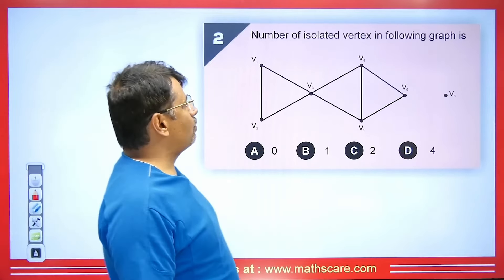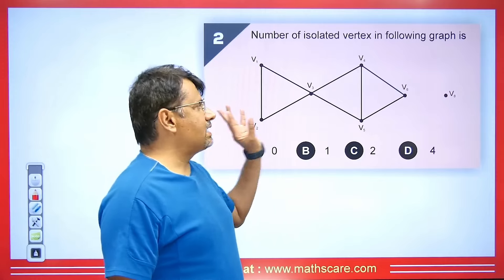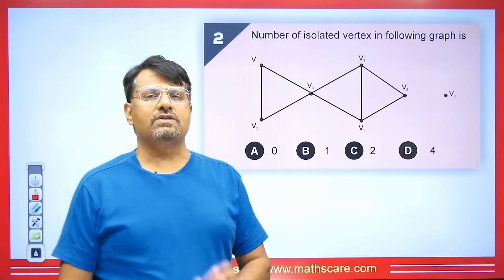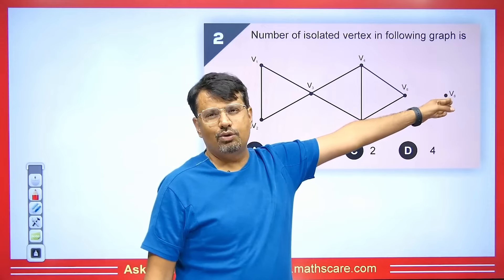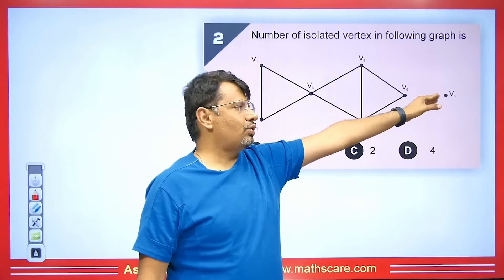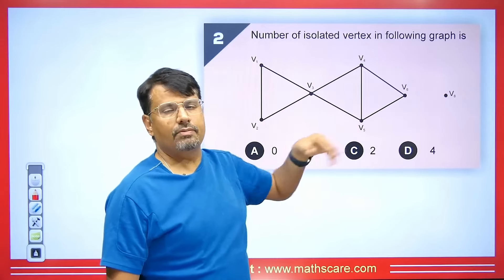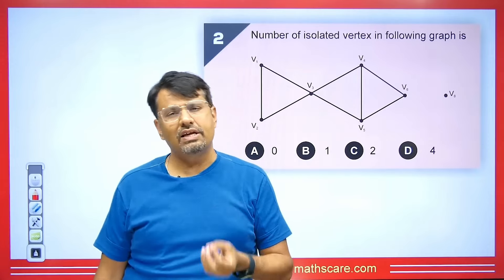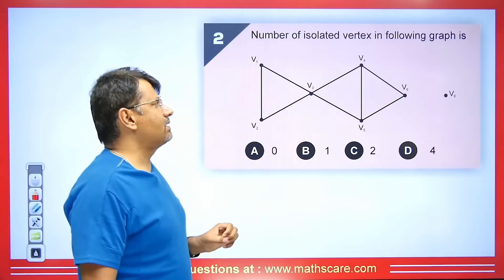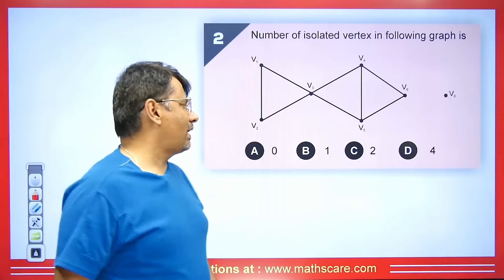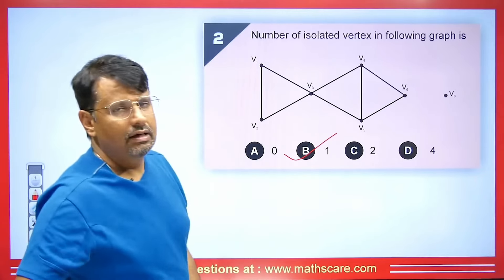The next question asks for the number of isolated vertices in the given graph. There is only one isolated vertex — the one whose degree is 0. We can calculate the degree of all other vertices and find they are more than 0. So there is only one vertex with degree 0, and it is the isolated vertex. That option is correct.